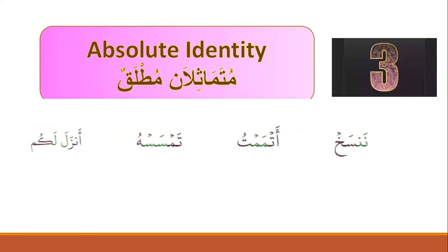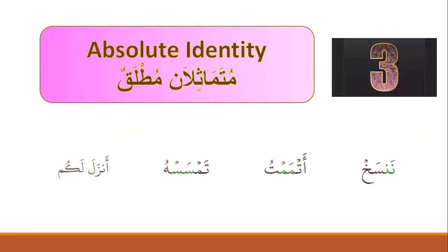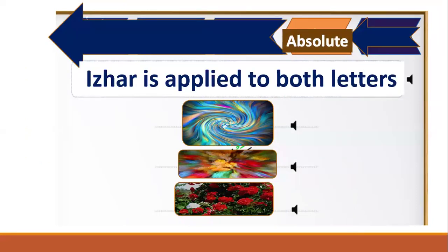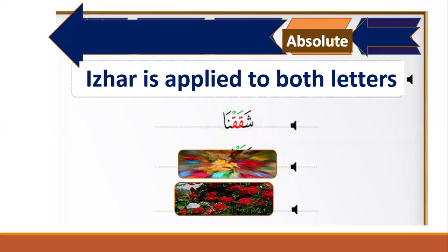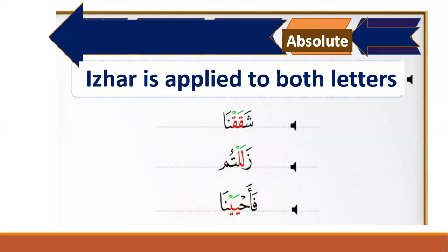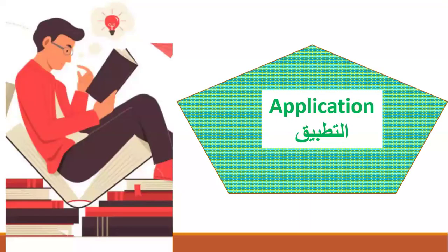The third category is absolute identity — متمثلان مطلق — such as ننثخ, أتممت, تمثتك. Note that أنزل لكم is مطلق — no idgham. For absolute identity, idgham is applied to both letters. Examples: شققنا (first letter has harakah, second has sukun), زللتم, and فأحيينا.